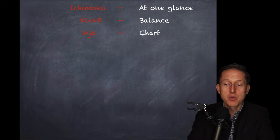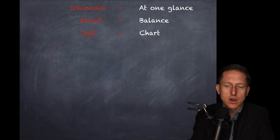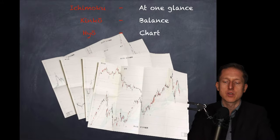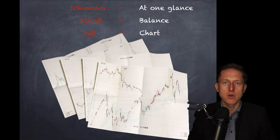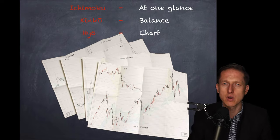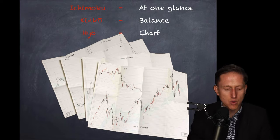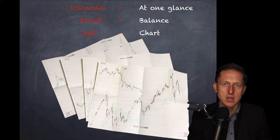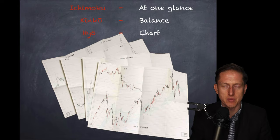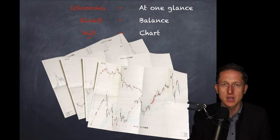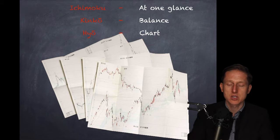Ichimoku means 'at one glance.' Kinko means 'balance.' And Hyo means 'chart.' So basically, one look and you know everything. You know where the market is, you know whether to buy or sell, or just hold that decision for now. The market might be indecisive. You will know everything just from looking at the charts.